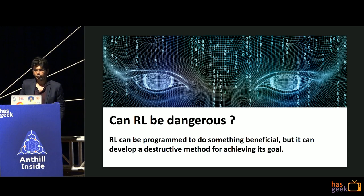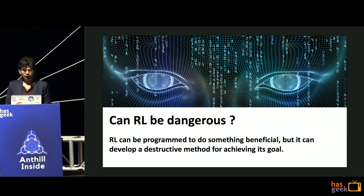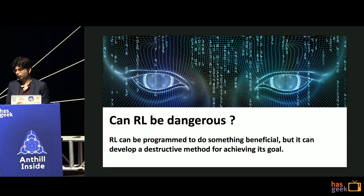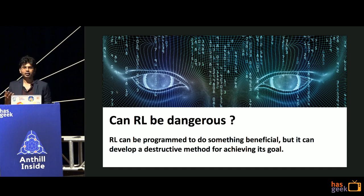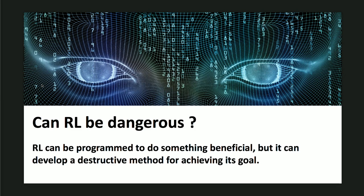A thought to end with: can AI be dangerous? With RL, you can program an agent to do something beneficial, but all it cares about is achieving its goal - maximizing the reward. You specified the reward but not how to achieve the goal. It can find destructive ways of maximizing that reward. For example, if your reward is 'drive to the airport as fast as possible', it could cause many accidents because it has no notion of what an accident is - all it cares about is reaching the airport faster. That's why concerns arise about how to specify rewards and goals correctly, how to bring in constraints, fairness, morality, or whether an agent can have a sense of guilt. Thank you very much.